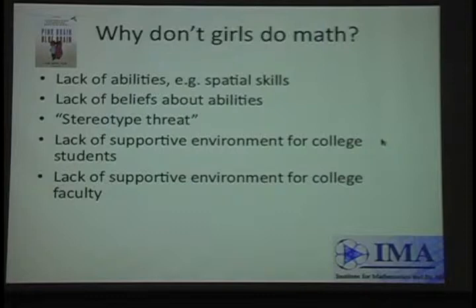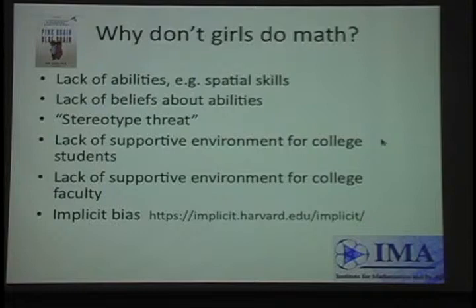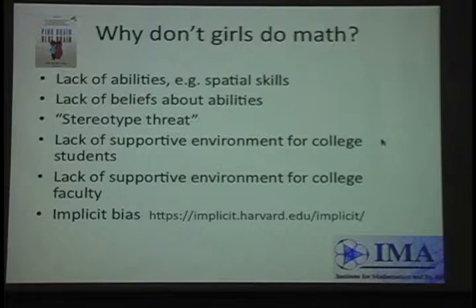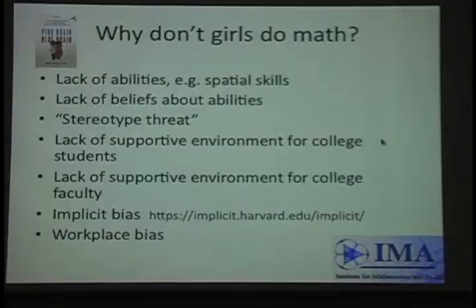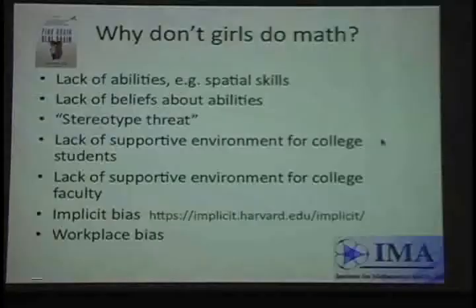I did the one for girls and boys in math, and it turned out I had no bias. Maybe there's a workplace bias — I don't know. This is from a paper called Why So Few, prepared for the Mathematical Association of America. The net result of these possible explanations tends to be called the leaky pipeline.